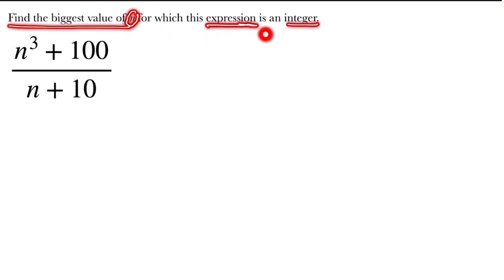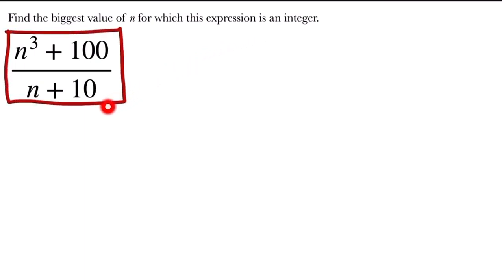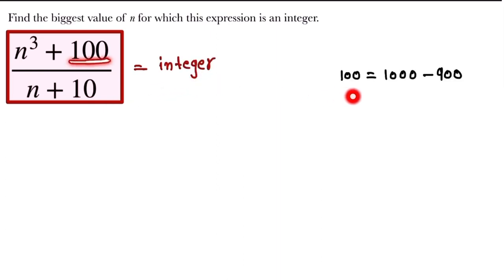This is our expression and we have to find the biggest value of n for which this expression is an integer. Here, look at this: 100 can be written as 1000 minus 900. When we subtract 900 from 1000 it gives 100. So here we can write n³ + 1000 - 900 divided by n + 10.